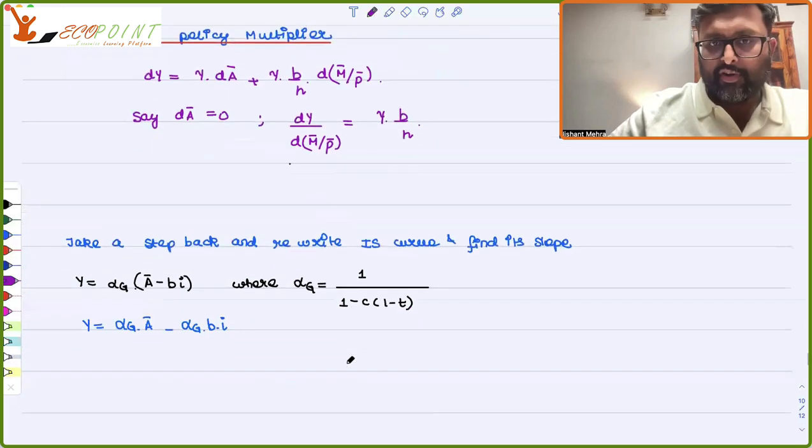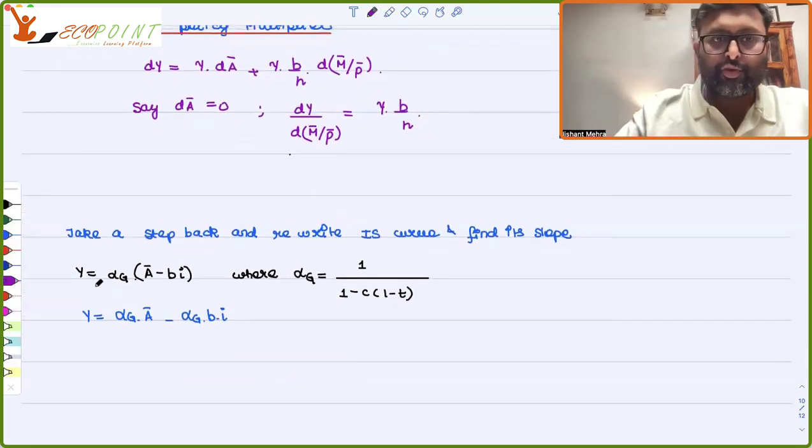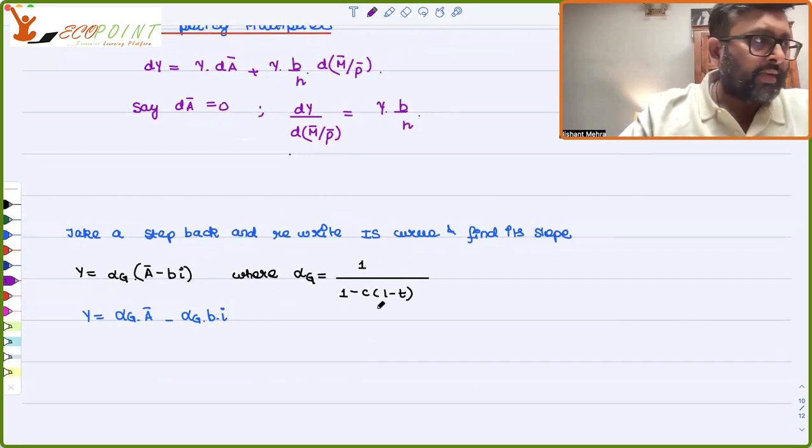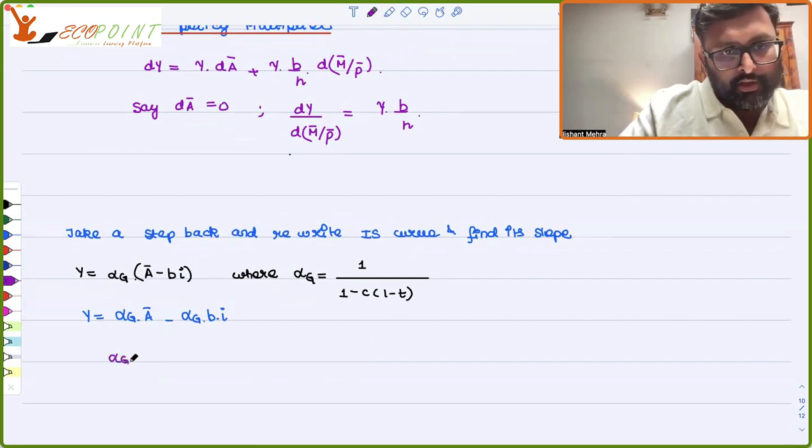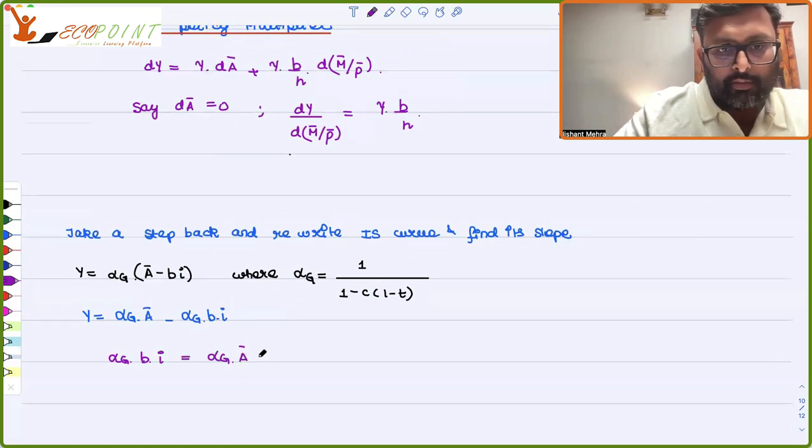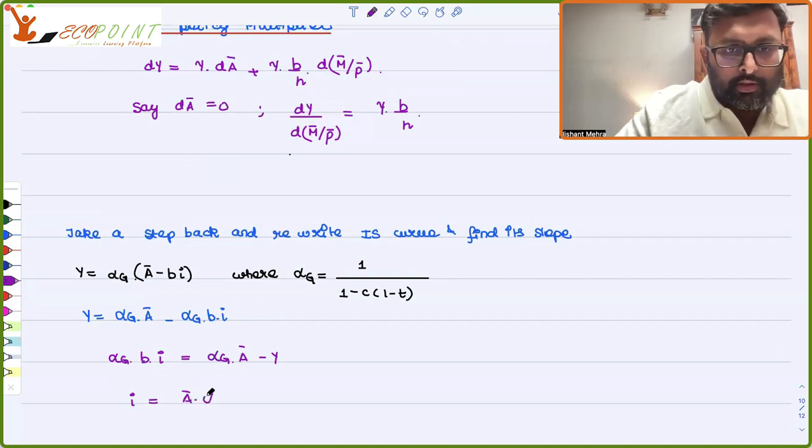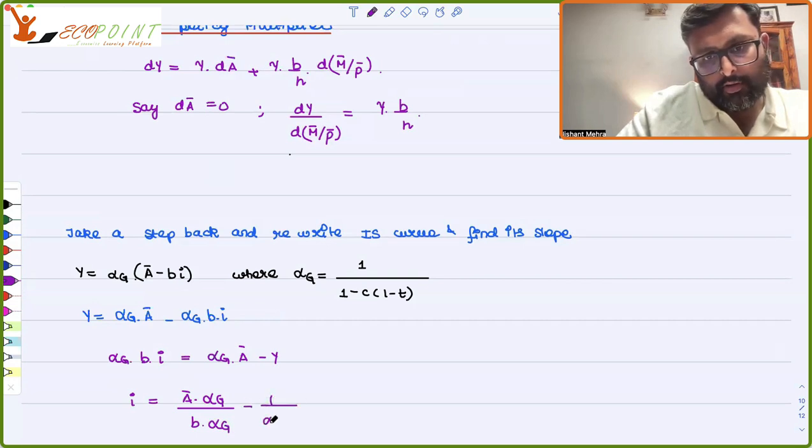So DY by D M bar by P bar is equal to gamma B by H. Now we'll take a step back and rewrite our IS equation and its slope. So you remember our IS equation was this, where alpha G was 1 upon 1 minus C into 1 minus T. So I can actually write from this alpha G B I equals alpha G A bar minus Y. And I can write everything in terms of Y, which is A bar alpha G upon B alpha G minus 1 upon alpha G B Y.